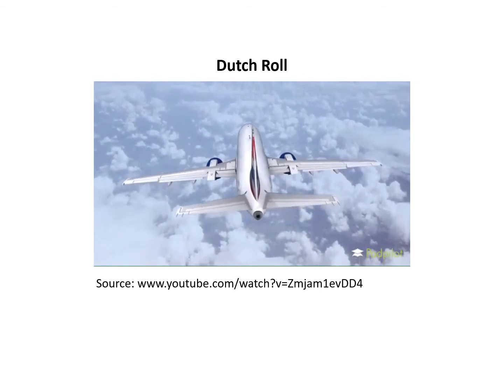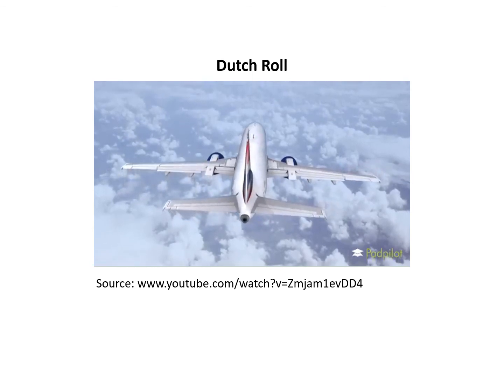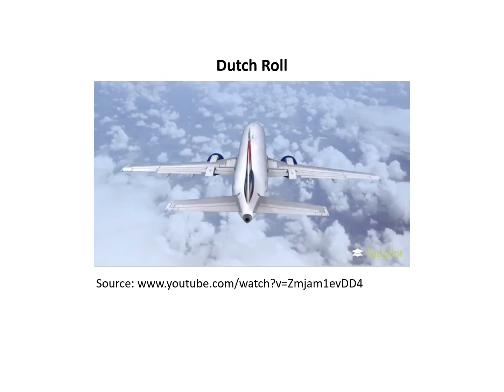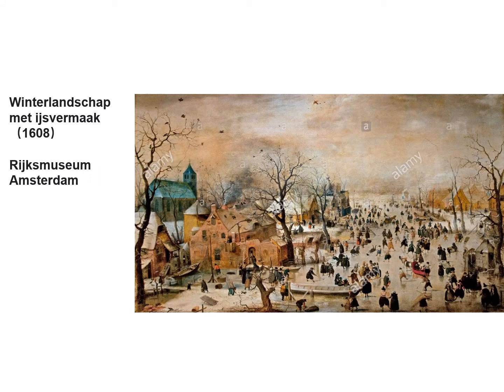The aircraft is tilting towards the left and towards the right. You may wonder why it's called Dutch Roll mode. This could be because the Dutch people are really good at skating, and it's kind of a tradition in the winter time. Shown here is an oil painting of people skating on the frozen canals, displayed in the Rijksmuseum in Amsterdam.